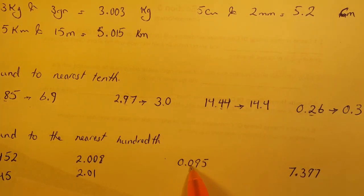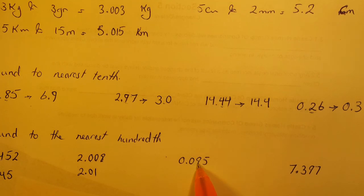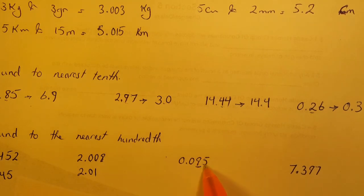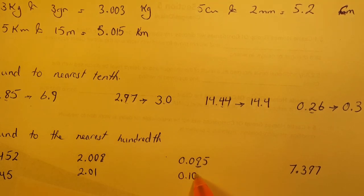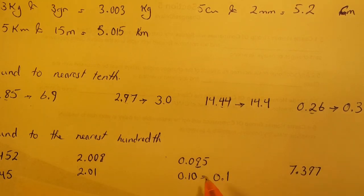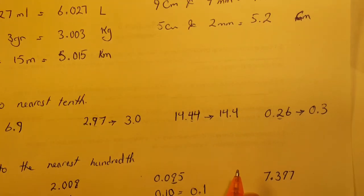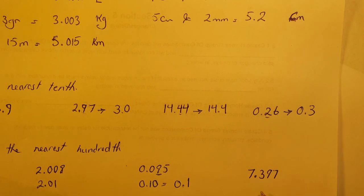For 0.095 rounded to the nearest hundredths: the hundredths digit is 9, followed by 5 — five or more means round up — so one is added to 9 making it 10, giving 0.10 or 0.1. Both are correct.